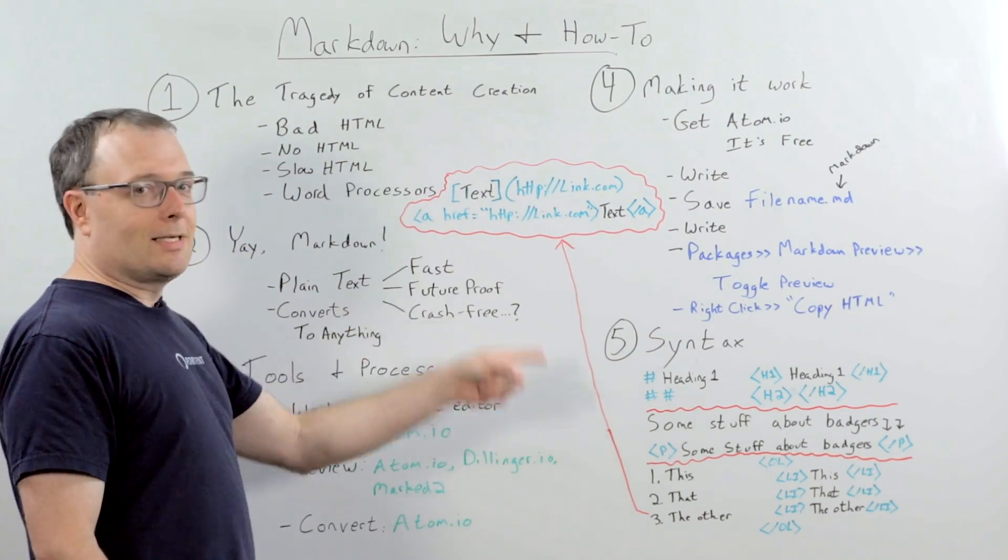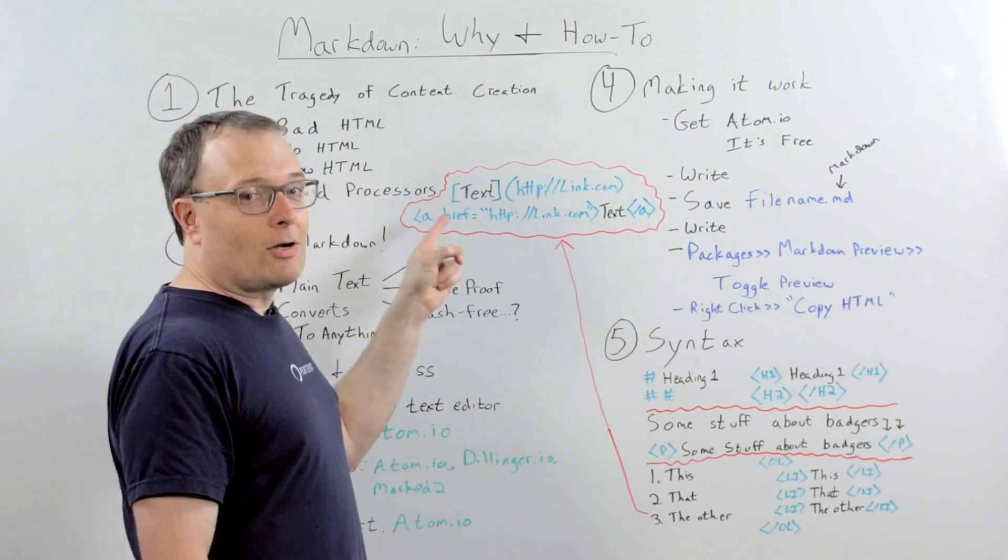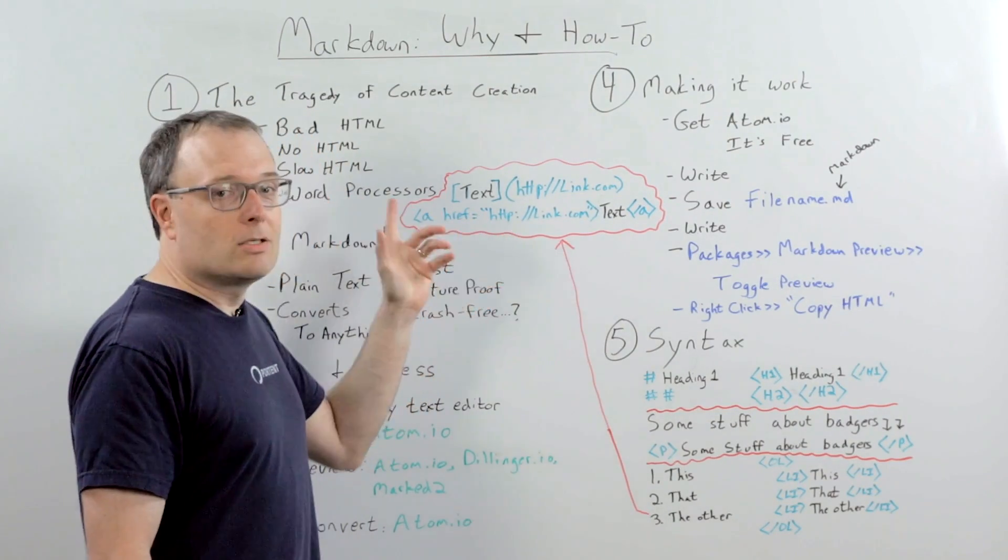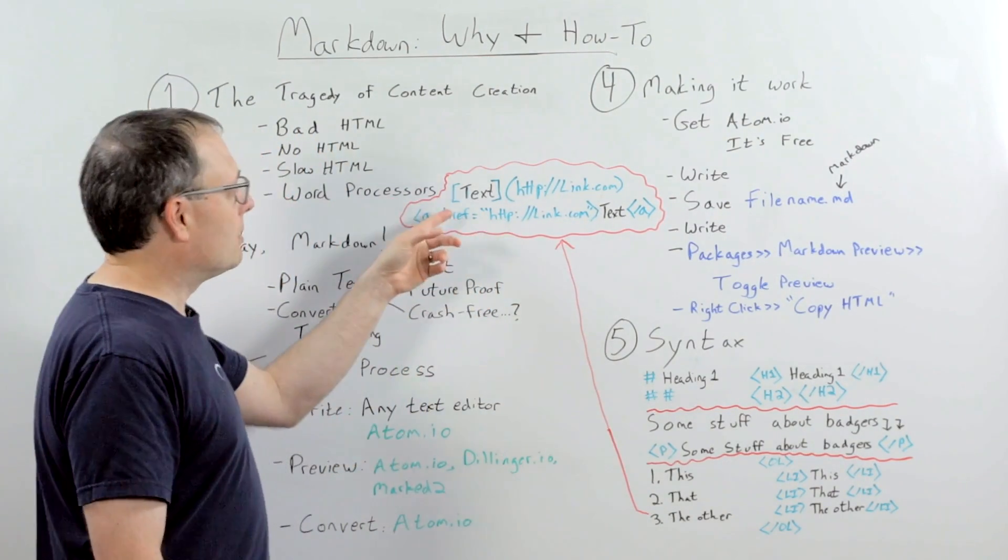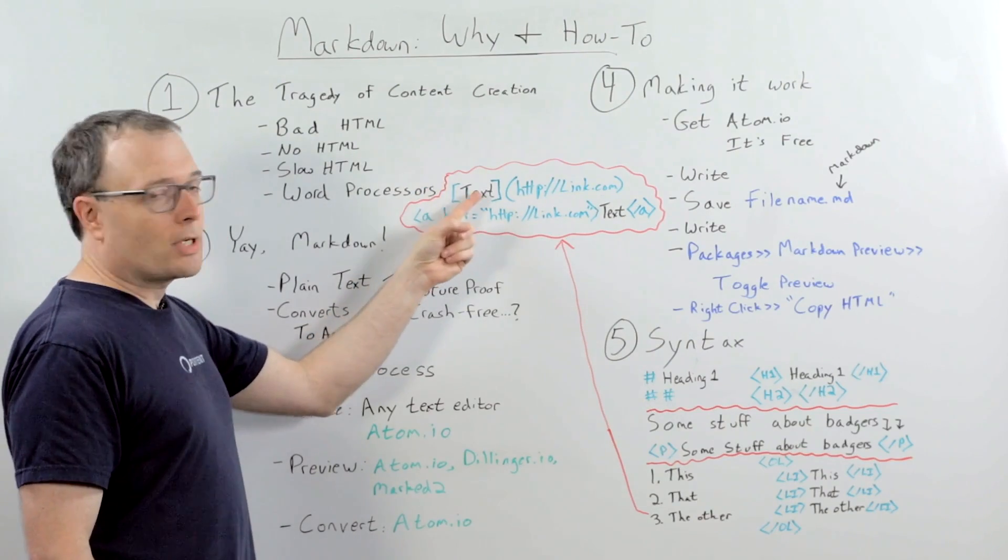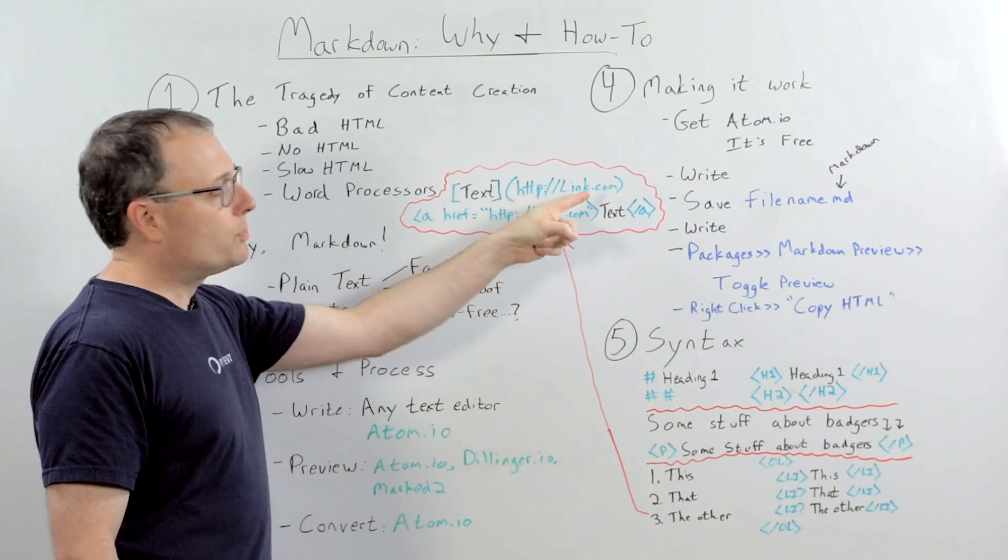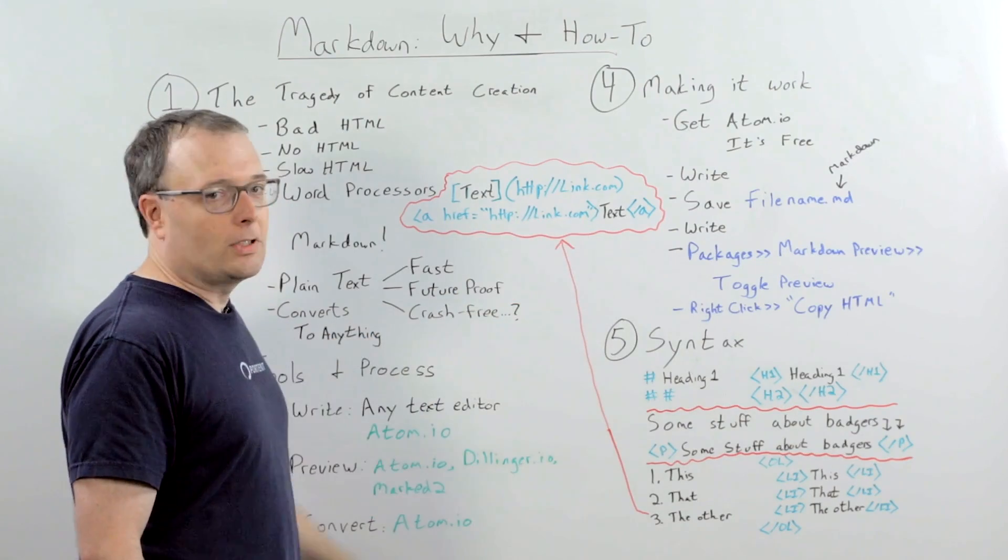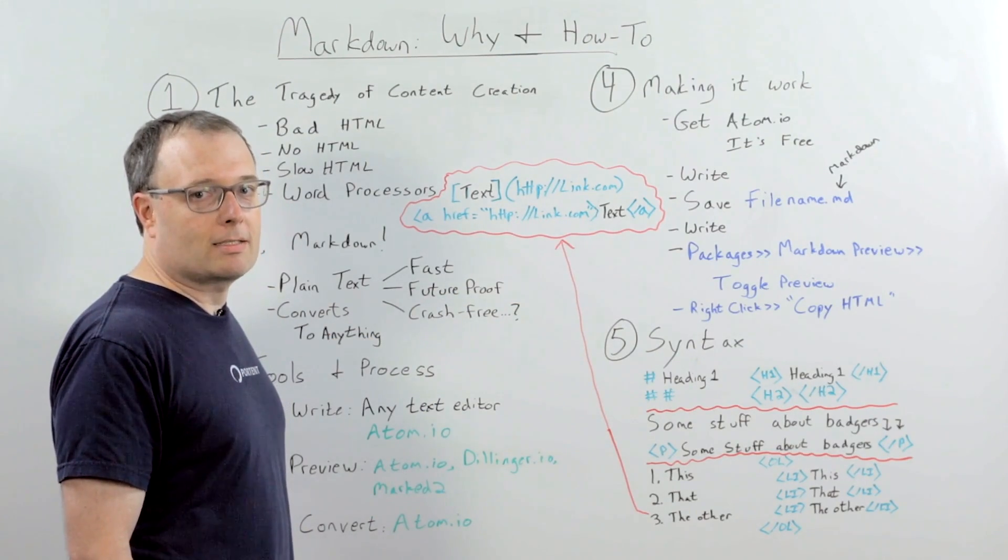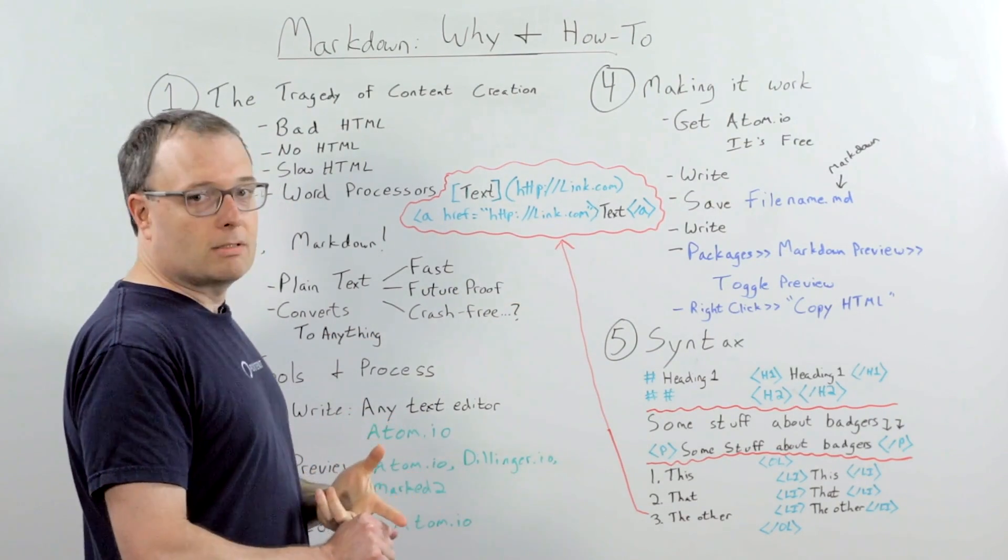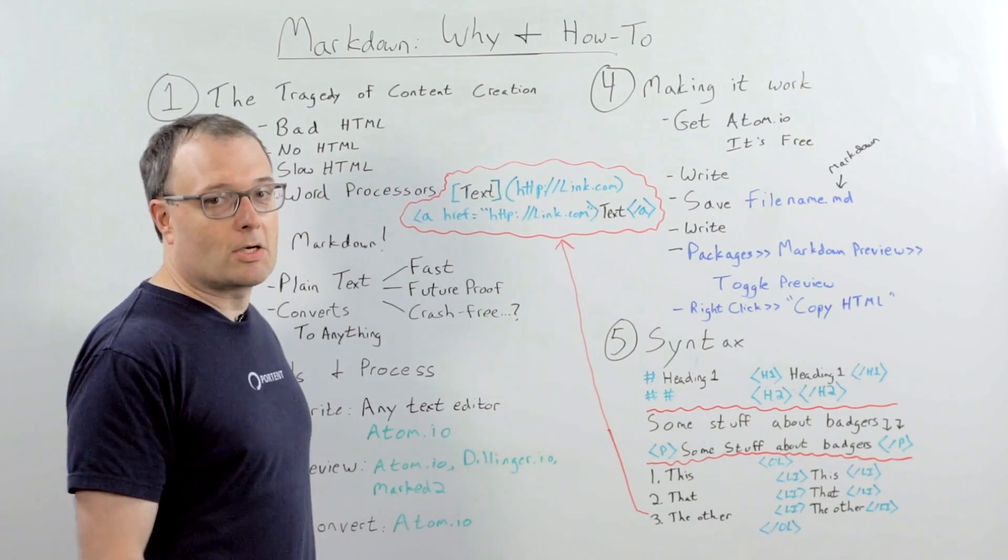Links, I got really excited, so I had to add this up here. Links are also really simple, and in fact, again, super simplified in Markdown. What you've got here is you put your text in brackets, then in parentheses, you put your web address. It will convert to a full link with the text as your proper link text. You can do the same thing with images. All you do is add an exclamation mark at the start.